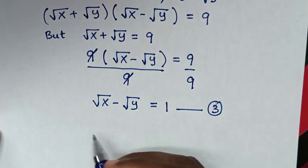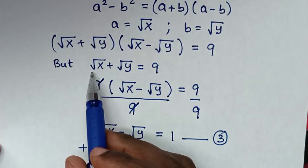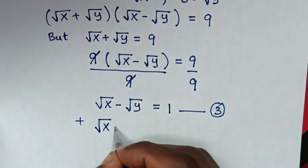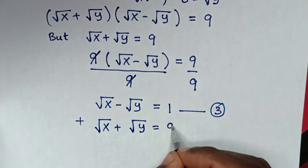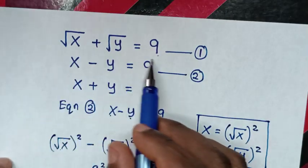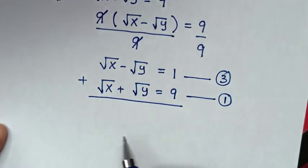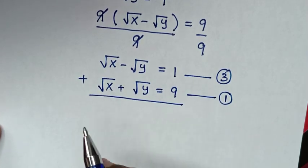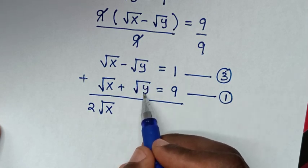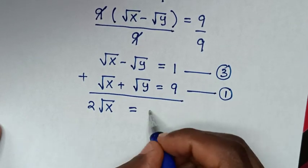Now we add equation 3 and equation 1. Equation 1 is √x plus √y equals 9, and equation 3 is √x minus √y equals 1. Adding: √x plus √x gives 2√x, and √y minus √y gives 0, so 2√x equals 10.